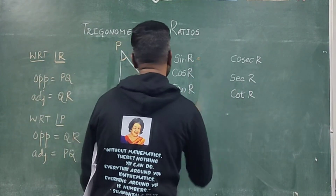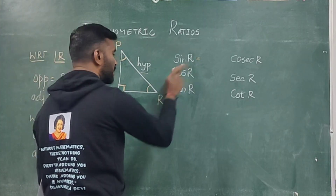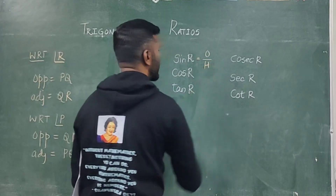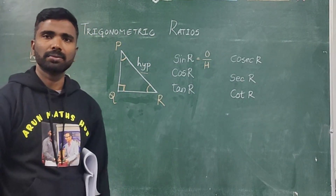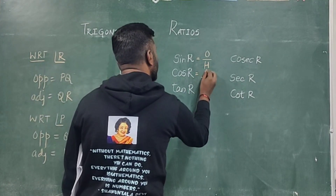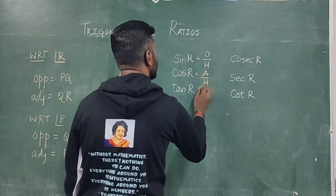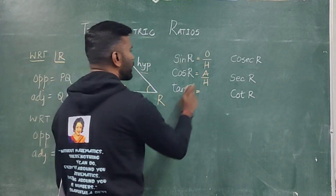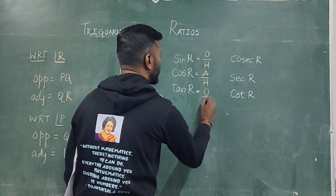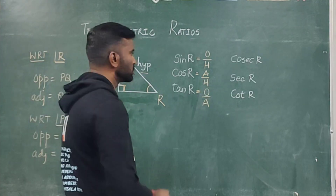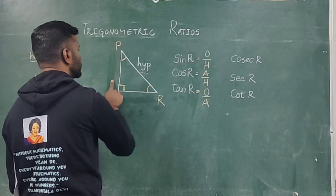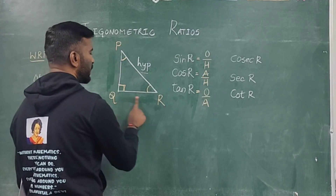Sine R is opposite by hypotenuse. Cos R is adjacent by hypotenuse. Tan R is opposite by adjacent, which is the same as sine over cos. With respect to angle R: opposite is PQ, adjacent is QR, and hypotenuse is PR.